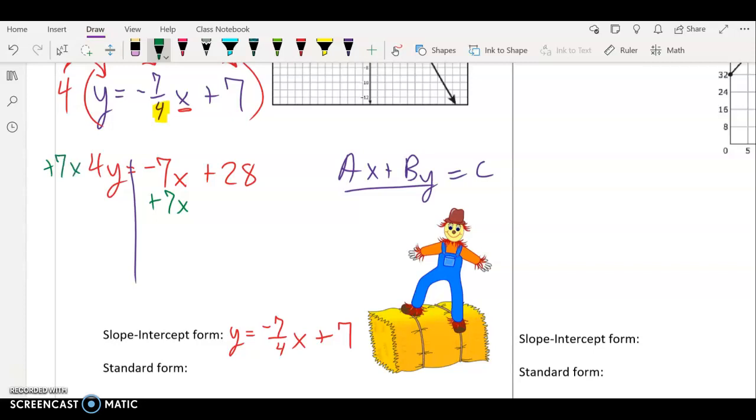So on the right side we have 28. On the left side we have a positive 7x and a positive 4y, because the a value - remember we talked about how the a value has to be positive in standard form, and in this case it is. So we are done. Our standard form is 7x plus 4y equals 28.